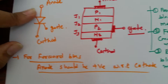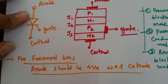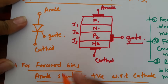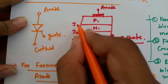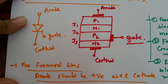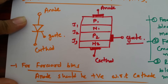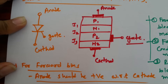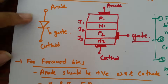When anode is positive with respect to cathode, SCR is in the forward bias state. When SCR is in forward bias, junction J1 and J3 will come into forward bias and junction J2 will stay in reverse bias.